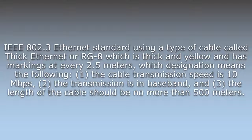10Base5 is an IEEE 802.3 Ethernet standard using thick Ethernet or RG8 cable, which is thick and yellow with markings at every 2.5 meters. The designation means: 1. The cable transmission speed is 10 Mbps. 2. The transmission is in baseband. And 3. The length of the cable should be no more than 500 meters.